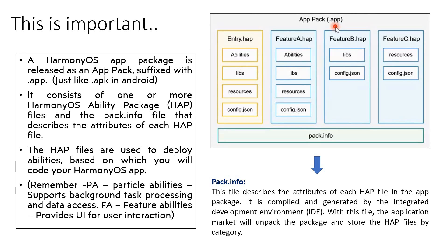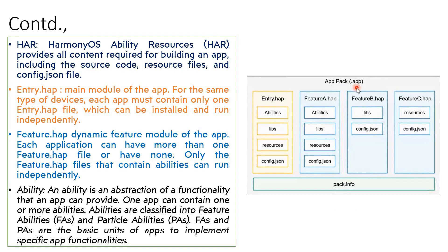We need to understand that the entire package is called the .app package, also known as the HarmonyOS App Package — remember, this is equivalent to .apk in Android. There are more components to learn here. The first one in the list is HAR. HAR stands for HarmonyOS Ability Resources — everything starts with HarmonyOS here.